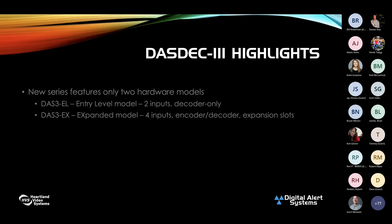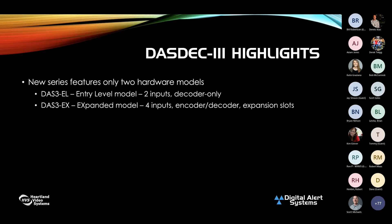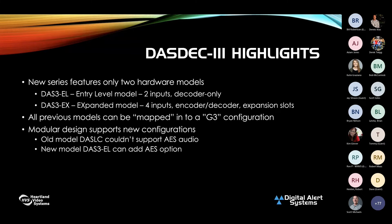Referencing back, we've mapped the entire old 16-model lineup into just two models: the EL and the EX. The old DAS-LC or low-cost series maps into the EL; everything else maps into the EX. This makes it really nice because we build these based on what options are necessary for a particular marketplace, not based on markets like radio versus TV or cable. The modular designs are even more modular, with more capabilities — yet simpler and easier because you just figure out what you need.